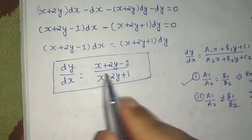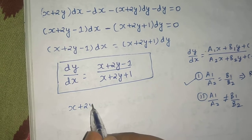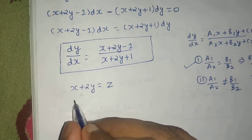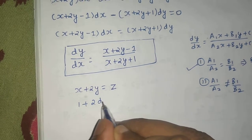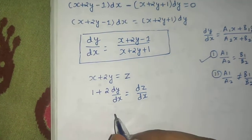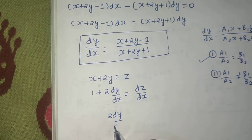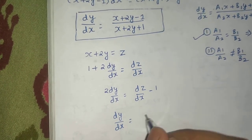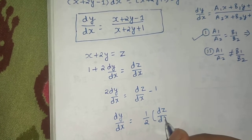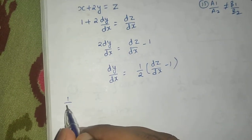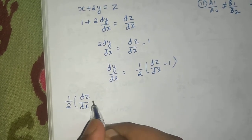Since a1/a2 equals b1/b2, we can reduce this to variable separable form by letting z equal x plus 2y. Differentiating with respect to x: 1 plus 2·(dy/dx) equals dz/dx. Solving for dy/dx gives dy/dx equals one-half times (dz/dx minus 1). We substitute this into our equation.